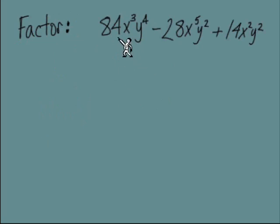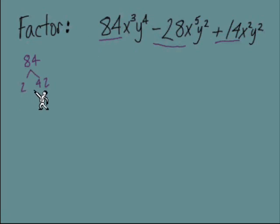Another example — numbers are a little larger and we've got two different variables. I have the same approach: think about just the numbers first, then the x's, then the y's. When we had 60 and 50 it was quick to see the largest common factor was 10, but with these larger numbers it's not so clear. So when it doesn't jump out at us, we'll look at the prime factors.